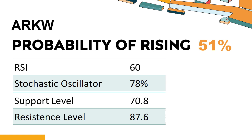Trend Outlook: The probability of ARKW's share price rising is 51%. When the probability of rising is higher than 50%, the stock has a higher chance of rising. Combining multiple technical analysis indicators, ARKW has five bullish signals and two bearish signals. ARKW's short-term support level is 76.8. If it falls below 76.8 during the session, it will have a chance to test 70.8.